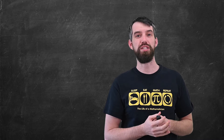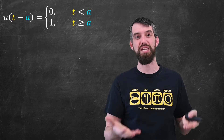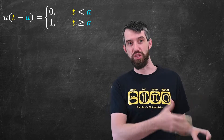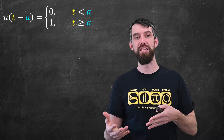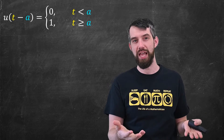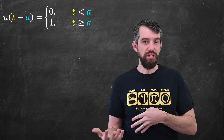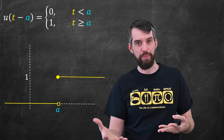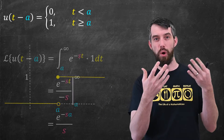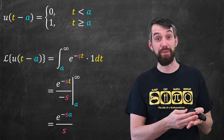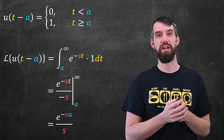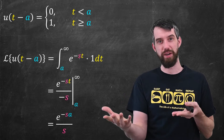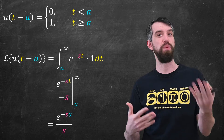Perhaps the best spot to start is the simplest of the discontinuous functions: the step function. This step function, which we write u of t minus a, is just zero on one side when t is less than a, and then is one on the other side when t is greater than or equal to a. It just looks like a step. We've already studied the Laplace transform of the step function, so I'll just put up the answer here.